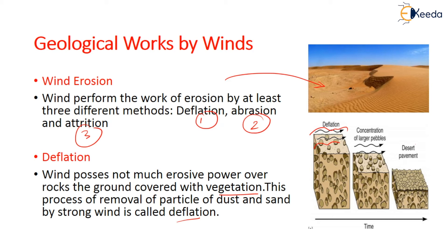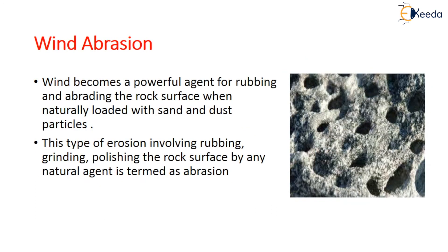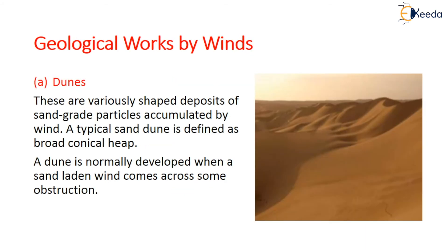Wind abrasion: wind acts as a powerful agent by continuously rubbing and abrading the rock surface, which is naturally loaded with sand and dust particles. This type of erosion involves rubbing, grinding, and polishing of the rock surface by a natural agent. This process is termed abrasion — abrasion involves rubbing, grinding, and polishing of the rock.